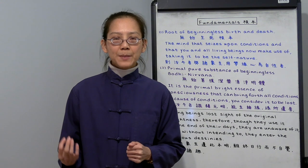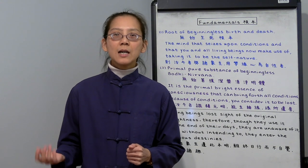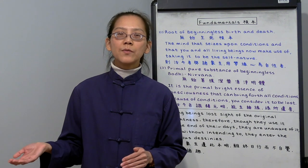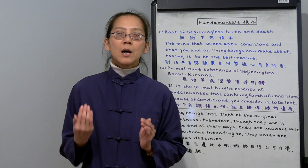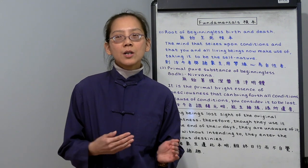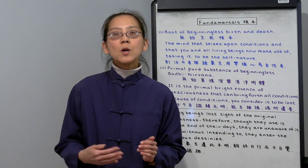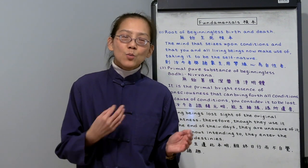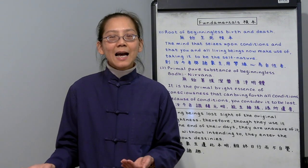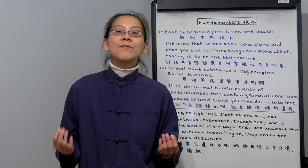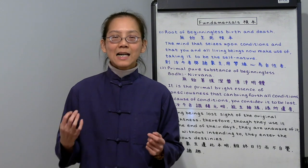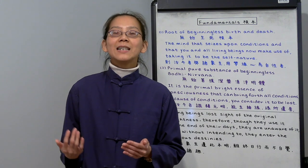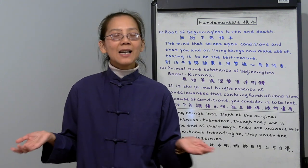The reason that Buddha expounded the Shurangama Sutra is because Ananda, he has been learning with Buddha for 12 years, but he was still being controlled by the spell of the daughter of Motanji. He almost broke the sexual misconduct precept because of her. Ananda was the most learned disciple. Why did this happen? Because he didn't find the fundamental of cultivation, as if he is trying to cook rice with sand.